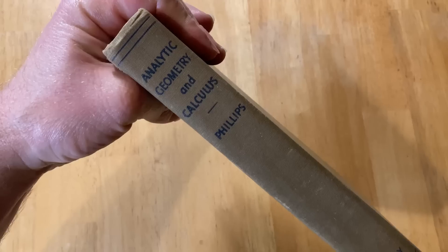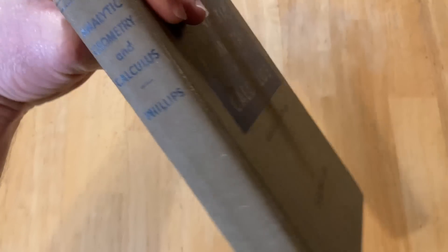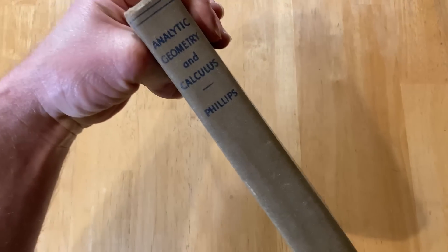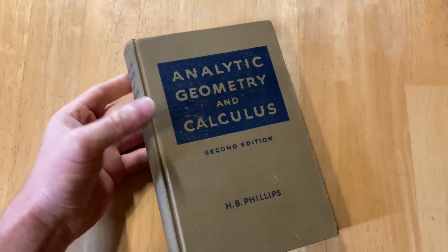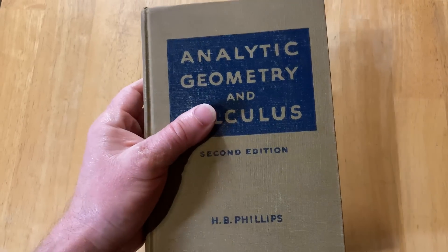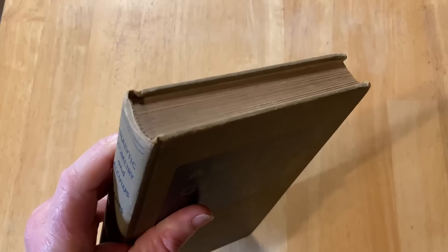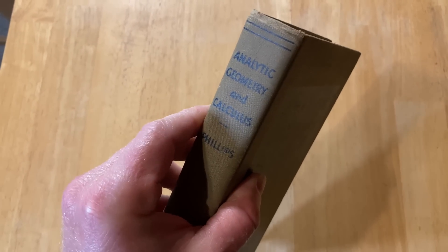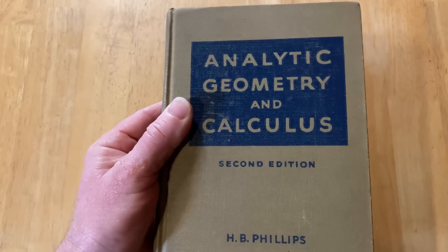This book is special for several reasons. First of all, it was written by a man named H.B. Phillips. He was a professor at MIT, which is the Massachusetts Institute of Technology, and he was a professor there for many years and then he became the chair. So he was basically the boss of all the other math teachers at MIT.